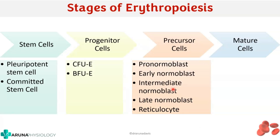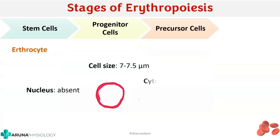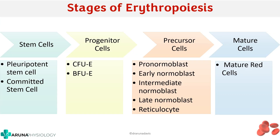So that completes the precursor cells: pronormoblast, early normoblast, intermediate normoblast, late normoblast, and reticulocyte. Remember the alternate names: pronormoblast is also called proerythroblast; early normoblast is basophilic erythroblast; intermediate normoblast is polychromatic erythroblast; and late normoblast is orthochromatic erythroblast. The mature cell is the erythrocyte — size around 7 to 7.5 micrometers, nucleus absent, cytoplasm acidophilic. When drawing the erythrocyte, remember to draw the central pallor as well.